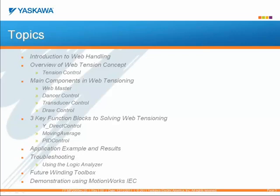An introduction to web handling and why tension is important in applications. We'll give an overview of the web tension concept, including tension control and discussion on rollers. We will also discuss the main components in web tensioning: specifically the webmaster, the dancer control, the transducer control, and the draw control. Three key function blocks to solving web tensioning applications include the Y-direct control function block, the moving average, and the PID control. We'll also look at an application example and some results, and we will do an example using the logic analyzer for troubleshooting. And then a quick rundown of the future winding toolbox, and finally a demonstration using these function blocks in the sample web tension application using MotionWorks IEC.